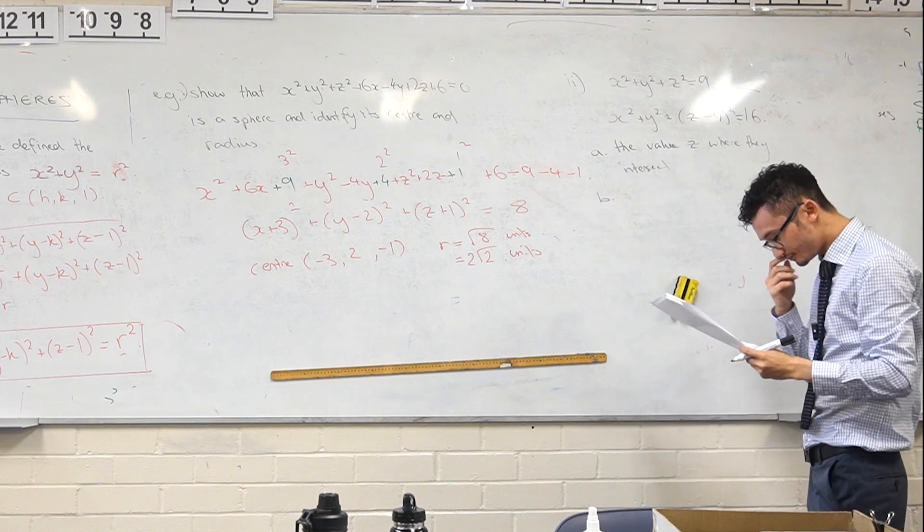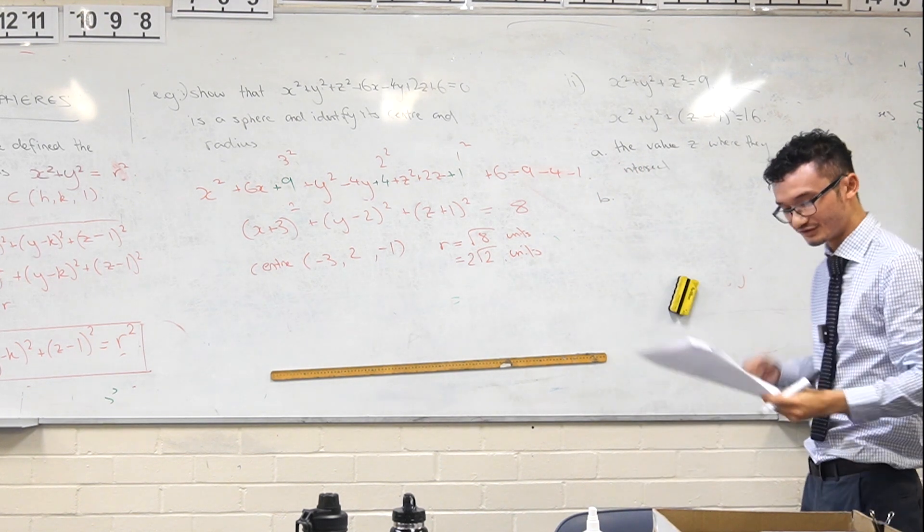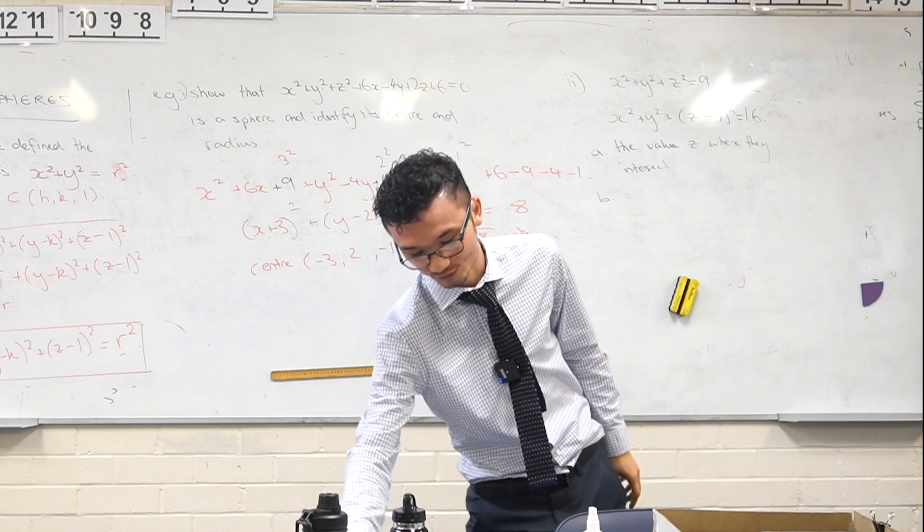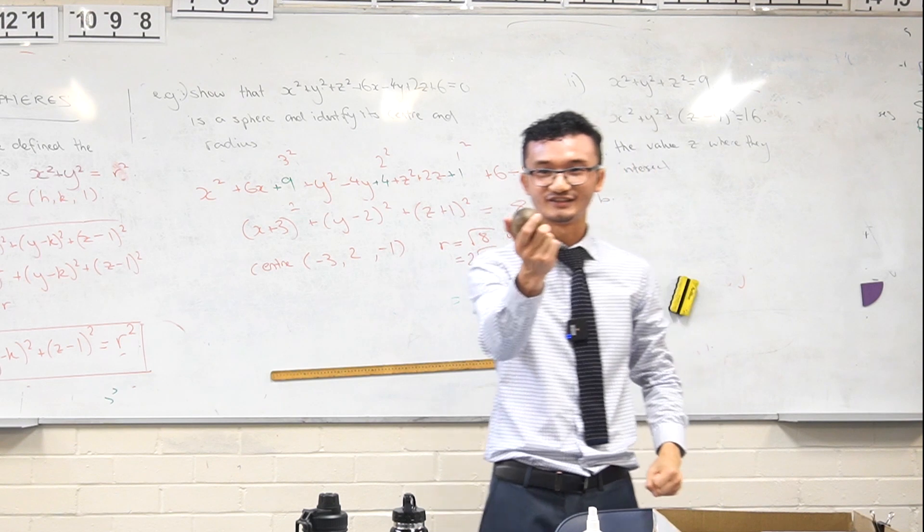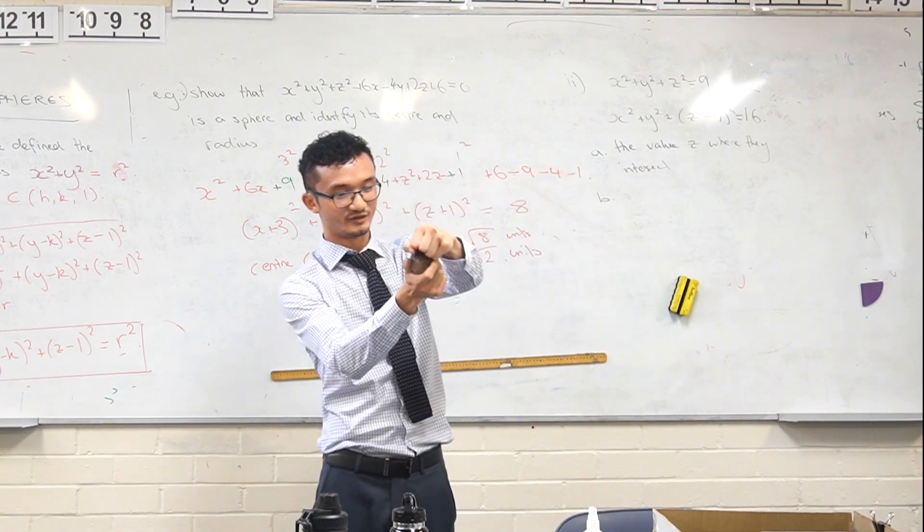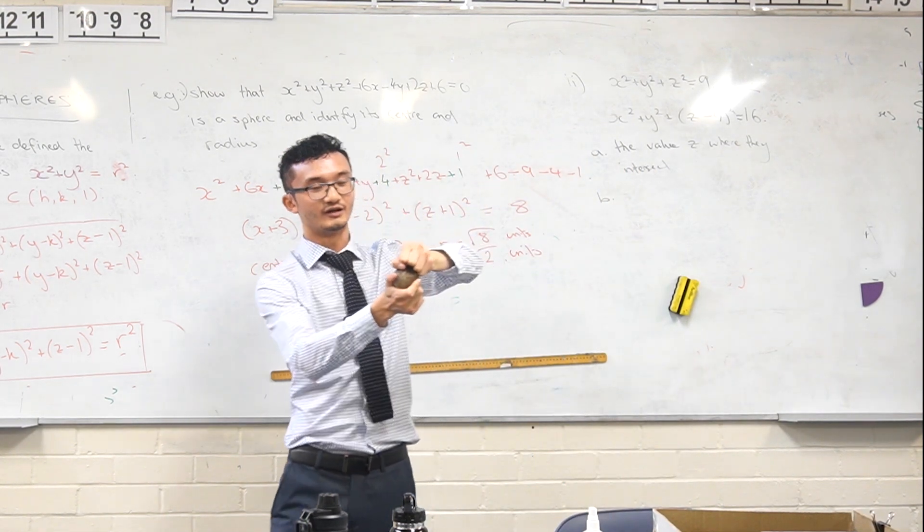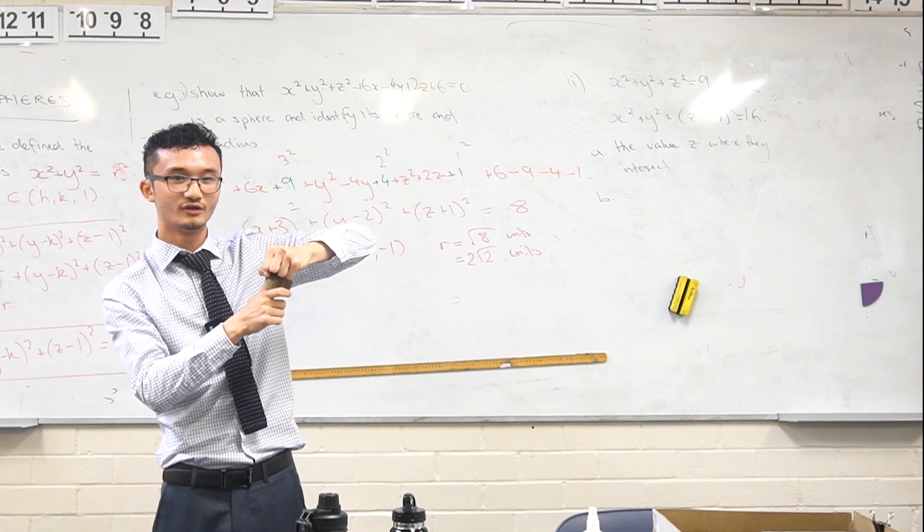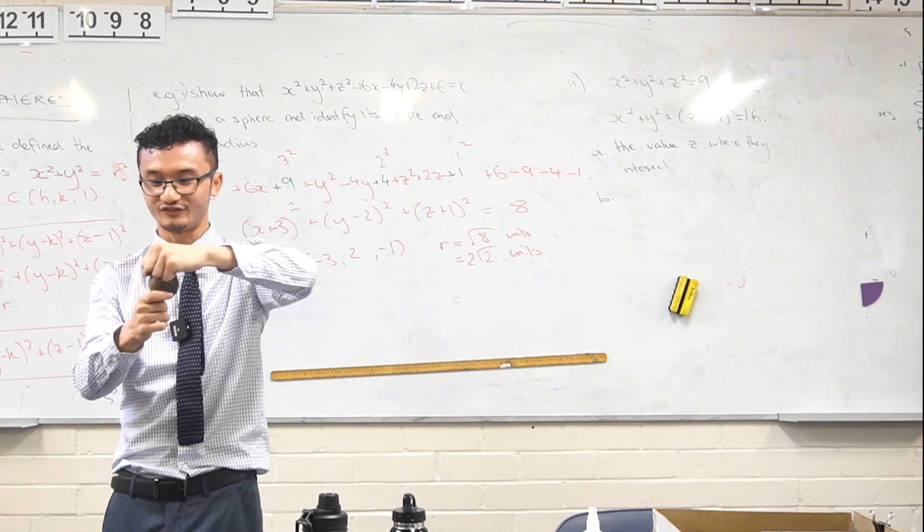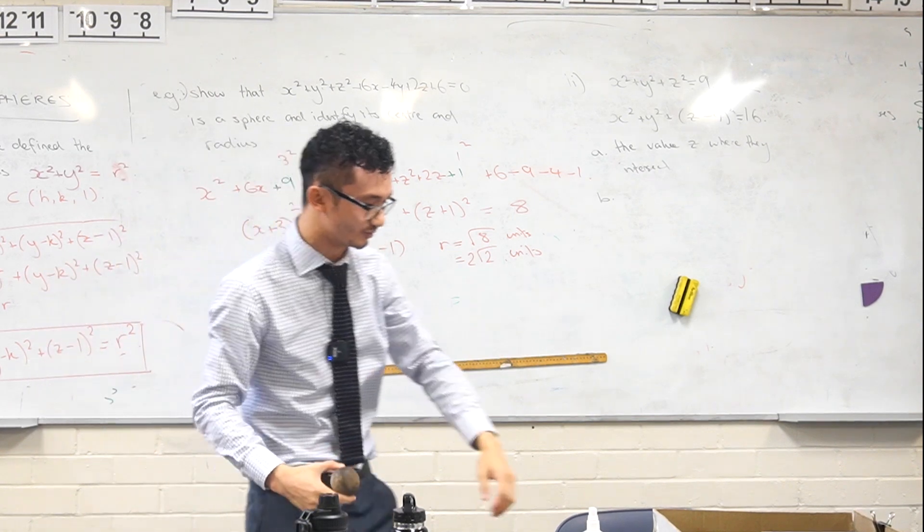And part b, think about it this way: if you take this sphere and they intersect somewhere, in that intersection, we don't have intersection points anymore. You have to visualize this a little bit.